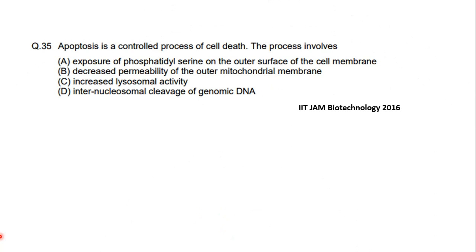The next question asks: apoptosis is controlled by — it is a controlled cell death process. The options include: exposure of phosphatidylserine on the outer surface of the cell membrane; decreased permeability of the mitochondrial membrane; increased lysosomal activity; and internucleosomal cleavage of the genomic DNA. The correct options are A, C, and D — decreased permeability of the mitochondrial membrane is false. Increased lysosomal activity and internucleosomal cleavage of genomic DNA are correct. This topic will be discussed in more detail in later videos.